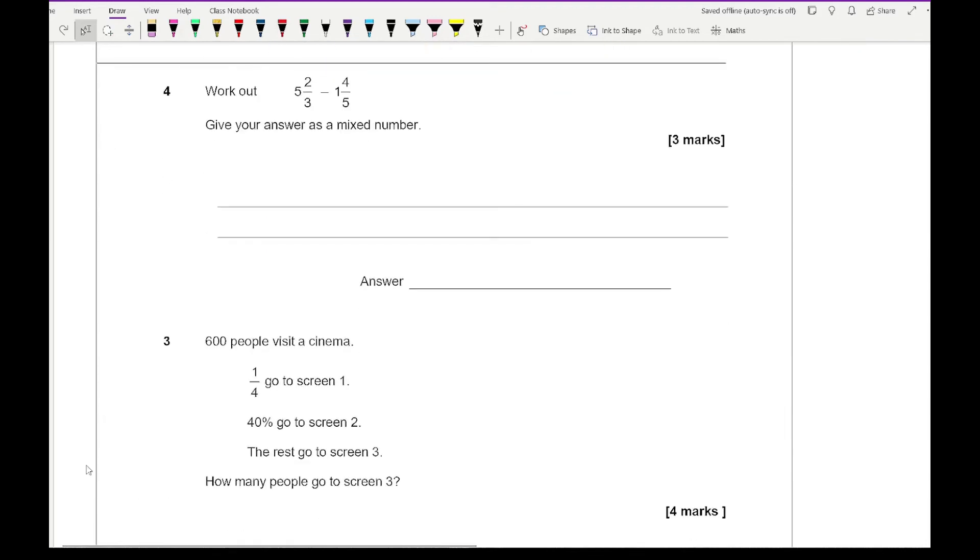Question 4 says work out 5 and 2/3 minus 1 and 4/5. Convert into improper numbers: 17/3 minus 9/5. The common denominator is 15. Multiply this by 5 and that by 3, so 17 times 5 gives 85, and 9 times 3 gives 27. Then 85 take away 27 gives 58. 58 divided by 15 gives 3, and 58 minus 45 is 13, so it's 3 and 13/15.